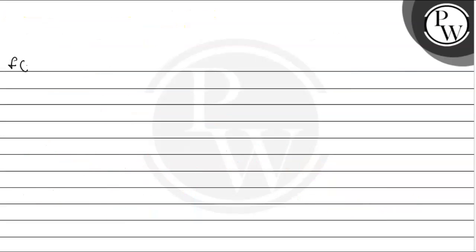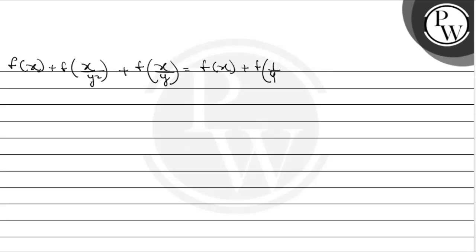Let us first rewrite the equation that has been given to us: f(x) + f(x/y)² + f(x/y) equals f(x)·f(1/y) minus 1/y³ + x³/y⁶ + 2. Now, we will use this equation to proceed.